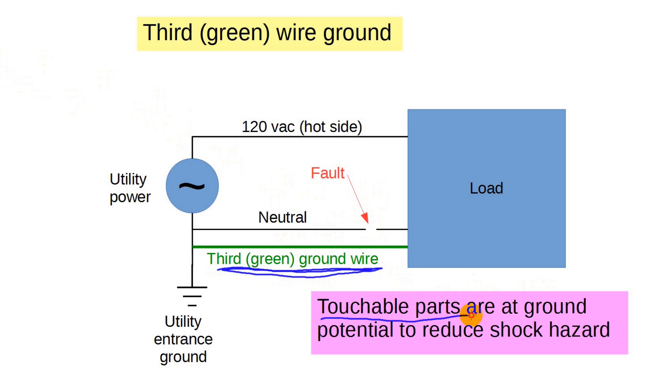Then, if there is a fault, the third wire keeps the exposed parts at ground potential, reducing the probability of shock. It should be noted that those appliances you have that don't have a ground plug are double insulated. In any event, never defeat the third wire ground because it's there for your safety.